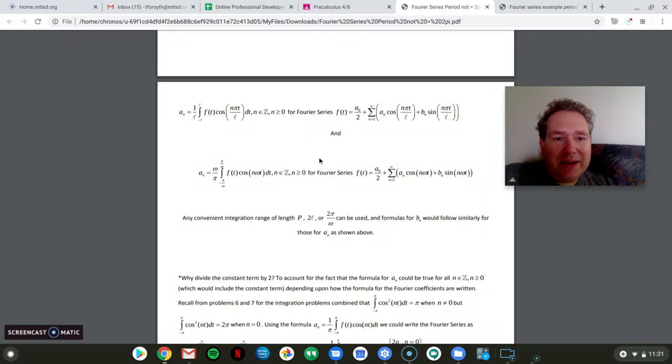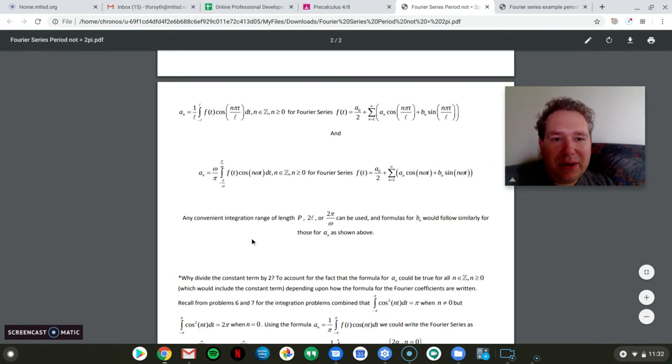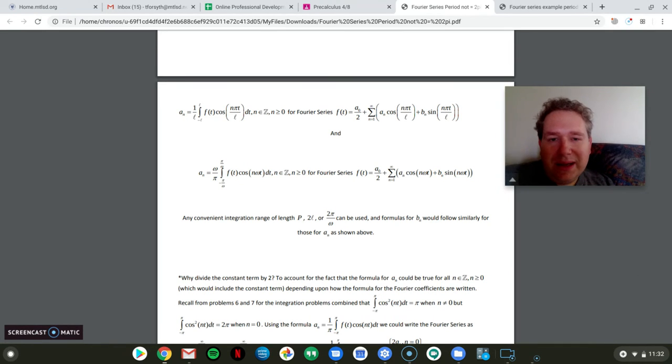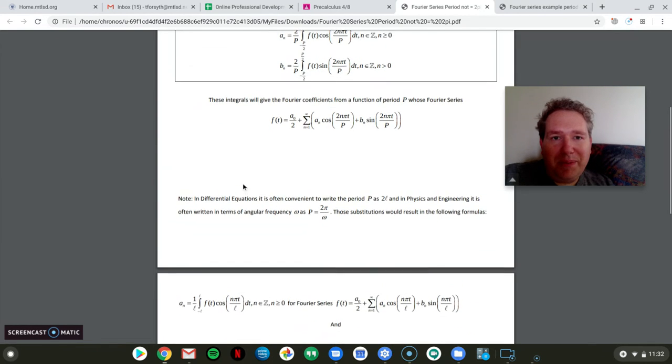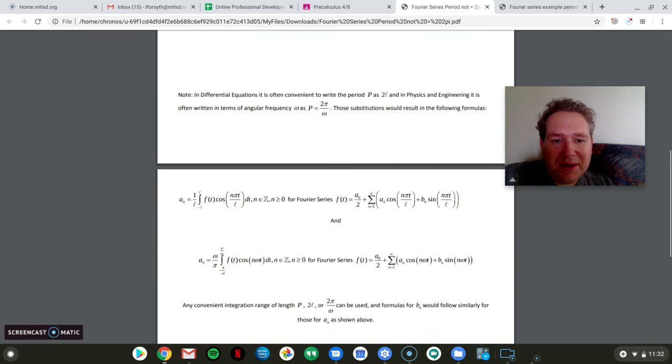So this, this, and this say exactly the same thing, just with further substitutions depending upon how you're attacking the problem and really what course you're taking. So just – that's another FYI with that. And so when I say here that any convenient integration range or length can be used, B sub n would be found exactly the same as the A sub n formulas would appear with just the same substitutions in here.